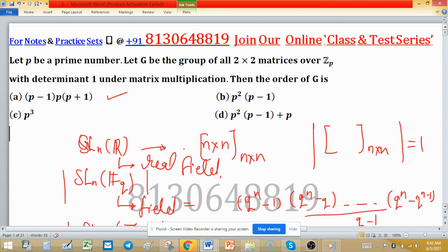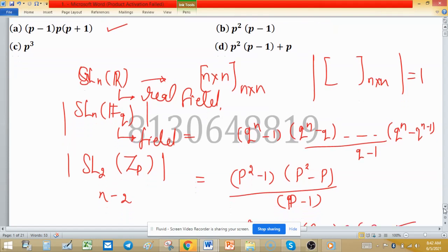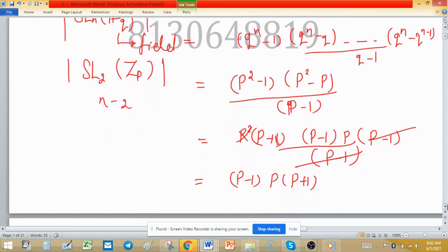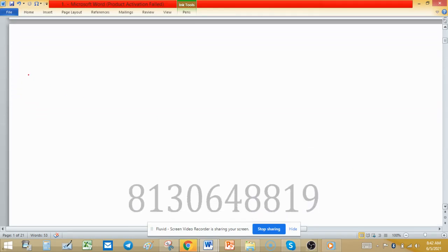Now check which option is giving this one. So option A is correct here. If you remember this formula, then it is a very easy problem. Sometimes problems can be asked for GL_n(R).